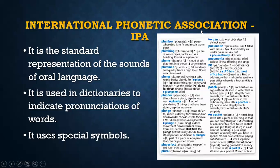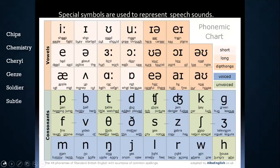The most influential system of articulatory description and transcription of speech sounds has been that of the International Phonetic Association, which aims to provide a phonetic symbol for every phoneme of every language. In the IPA tradition, speech is characterized as a sequence of separate speech segments such as consonants and vowels. In this phonetic chart, you will find the phonetic symbols of 44 sounds, out of which 24 sounds are consonants and 20 sounds are vowels.